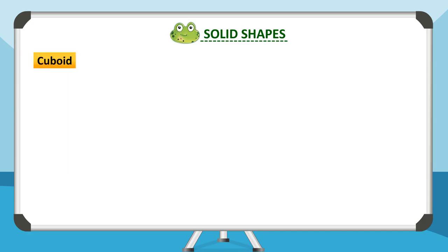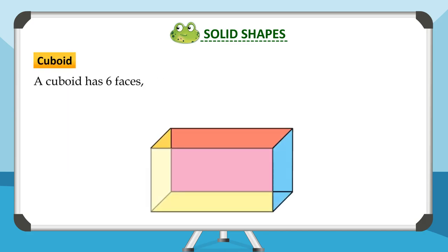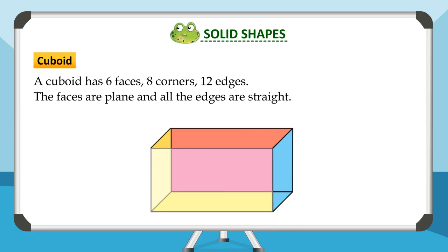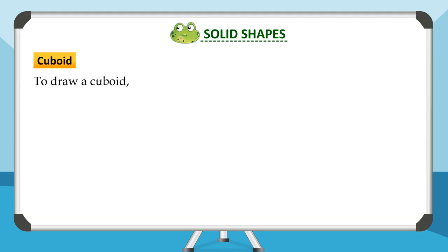A cuboid has 6 faces, 8 corners, and 12 edges. The faces are plain and all the edges are straight. Its opposite faces are of the same size.